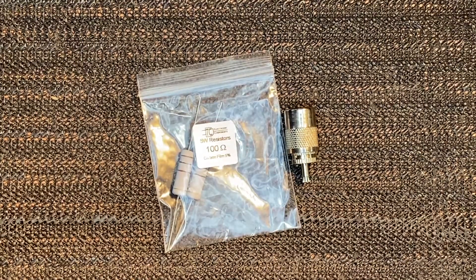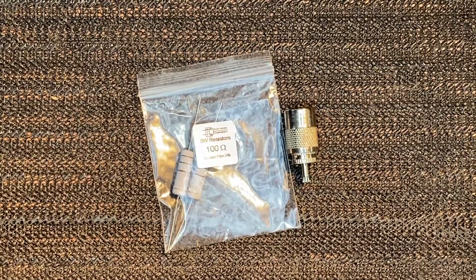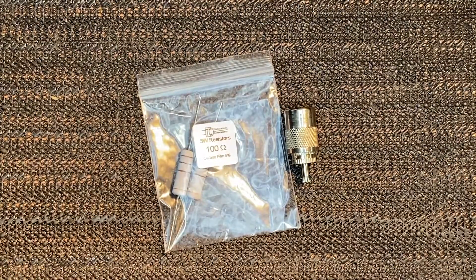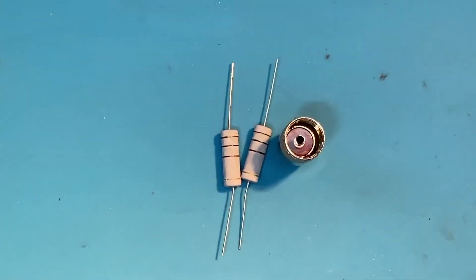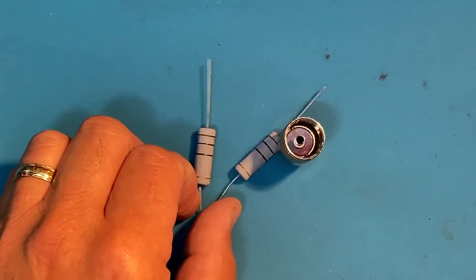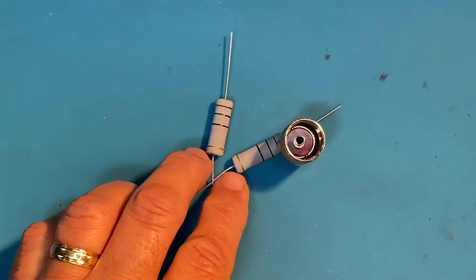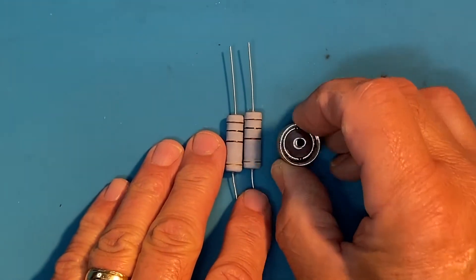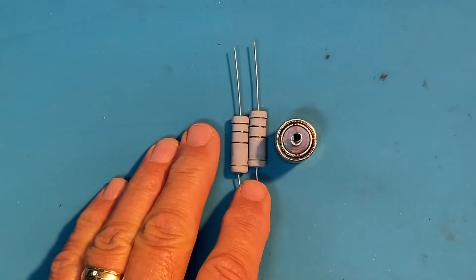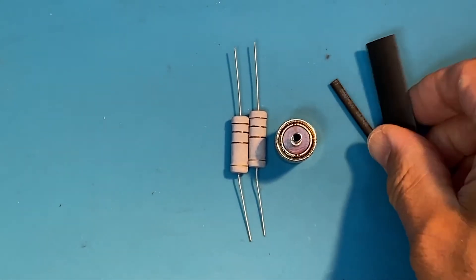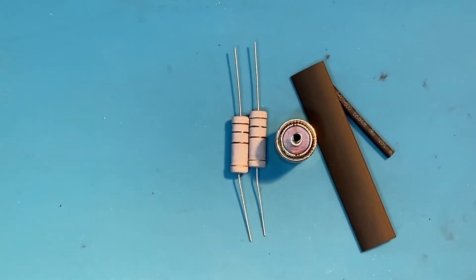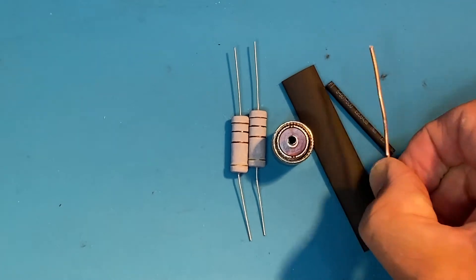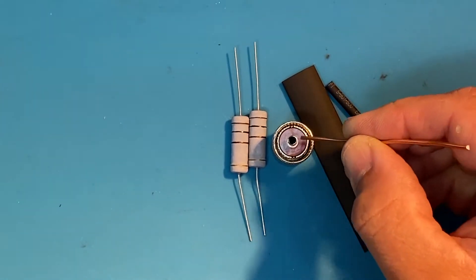Hello, welcome to the Shed Shack Lab. Today we're going to build a CB dummy load. We've got our two 5-watt 100-ohm resistors that we're going to use in parallel to make our 50-ohm load. Then we've got our PL259 connector, some heat shrink tubing, and just a bit of connecting wire to join the resistors up to the center contact.